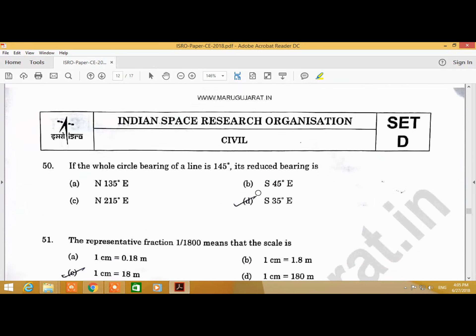Question Number 50: If the whole circle bearing of a line is 145, its reduced bearing answer is D, S35E.